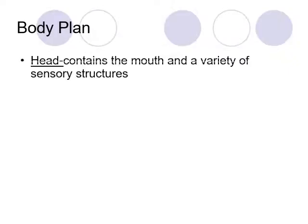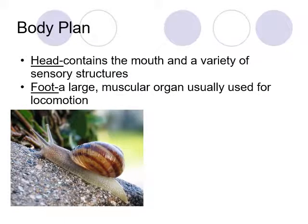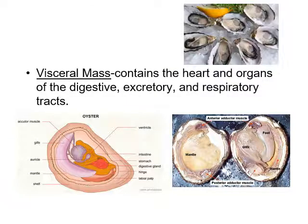The basic body plan of a mollusk contains a head, which has the mouth and a variety of sensory structures — we can see on the snail its antennae, mouth, and sensory structures toward its anterior part. Mollusks also have a foot, which is a large muscular organ used for locomotion — on the bottom of snails and slugs, helping it push off surfaces to move through its environment. They also have a visceral mass, which contains the heart and organs of the digestive, excretory, and respiratory systems.